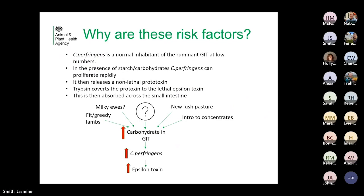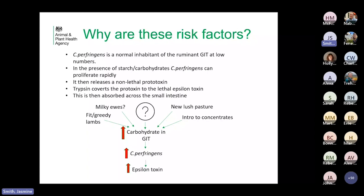Why are these risk factors for pulpy kidney? Clostridium perfringens is a normal inhabitant of the ruminant GI tract, but only in low numbers. In the presence of starch or carbohydrates — when they get a slug of concentrate — Clostridia can proliferate rapidly, releasing a non-lethal prototoxin. This is then converted to the lethal epsilon toxin by trypsin and absorbed across the small intestine. This is generally why the thickest, greediest lambs get pulpy kidney — they get in first and gorge on cake.